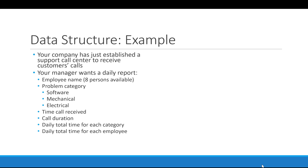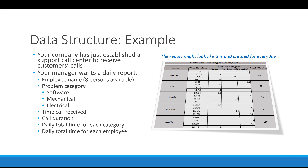When you think about that information your manager wants, you'll most likely end up with something similar to this report. You have the employee name at the left column, then the time received. At the top you can see the problem category, and when you cross the problem category with the name you get the duration. At the right you can see the total minutes for each employee, and at the bottom it shows the total for the problem category.